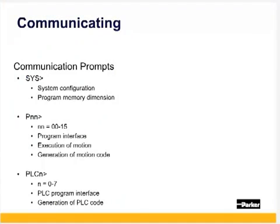From the terminal window, there are three types of communication prompts. The system prompt can be reached by typing SYS. From the system level, the MEM command displays the amount of free memory in bytes that can be allocated to a program. To see a report of the current memory allocations, use the DIM (dimension) command to see what memory has been dimensioned. From the program level, typing MEM displays the amount of memory available for program, move buffer, variable, and array storage.